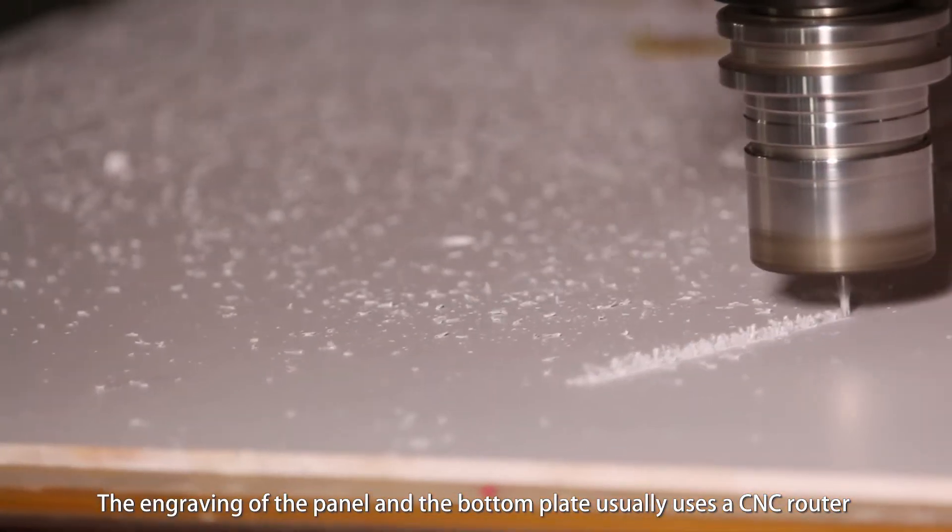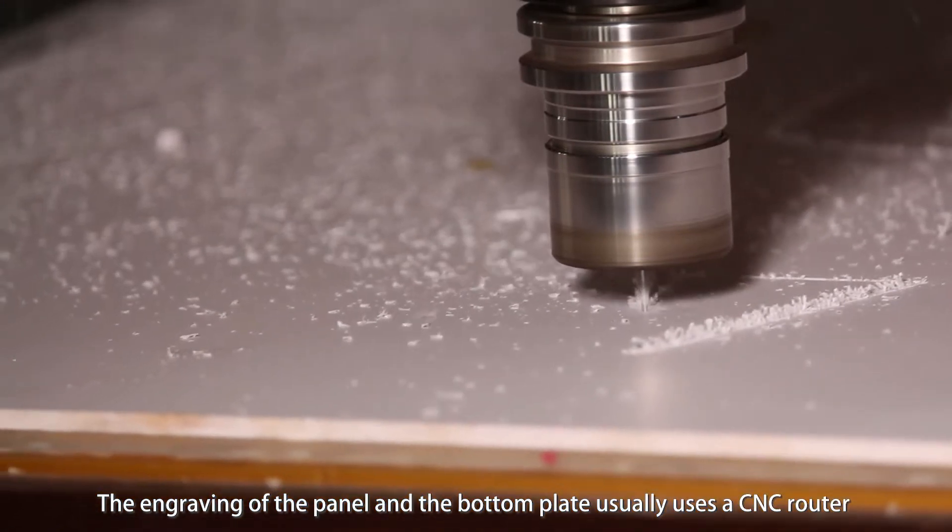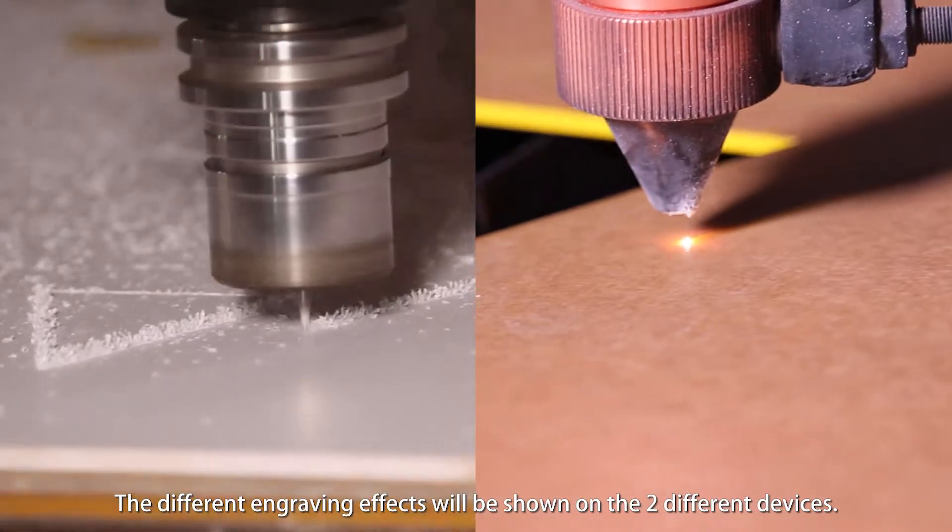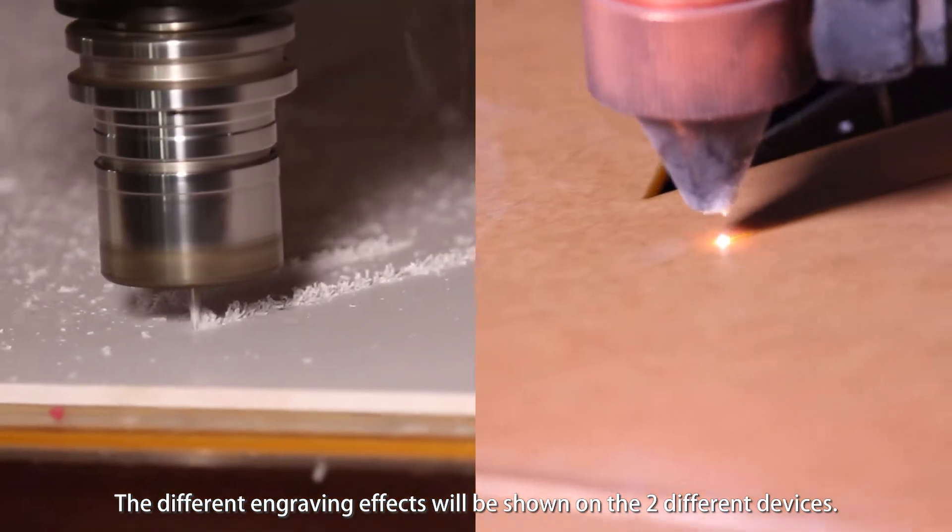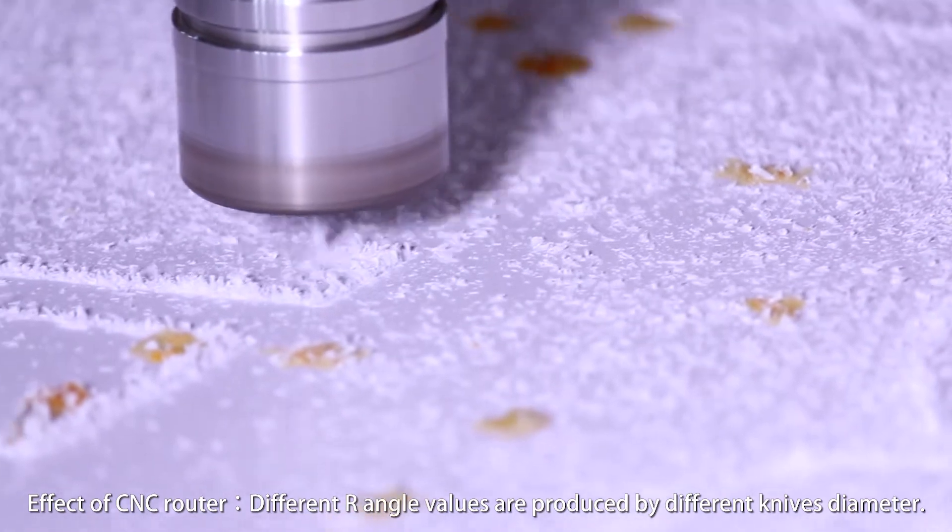Engraving acrylic panel and PVC bottom plate. The engraving of the panel and the bottom plate usually use a CNC router or laser engraving machine. The different engraving effects will be shown on the two different devices.